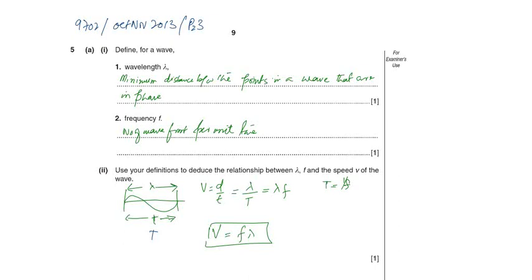9702 October November 2013 paper 2 variant 3. This question is about waves, question number 5. Define for a wave: number one, wavelength.